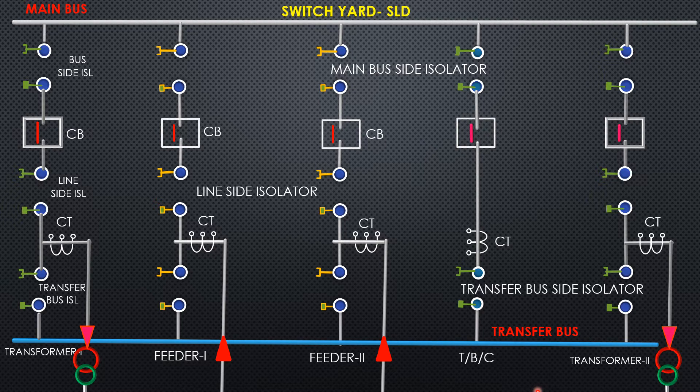These isolators and circuit breakers are controlled by switches at the control panel. Power from the far end is taken to the main bus through feeders — feeder 1 and feeder 2. If possible, power may also be sent to another substation through these feeders. Power from the main bus goes to the transformer primary, and the transformer steps down or steps up the voltage according to demand.